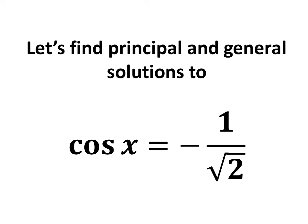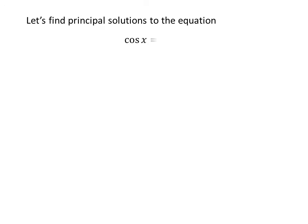In this video, we will learn to find the principal and general solutions to the equation cosine of x is equal to minus 1 upon square root of 2. Let us first find the principal solution. We know the solutions to the trigonometric equation for which x is greater than or equal to 0 and less than 2 times pi are the principal solutions.